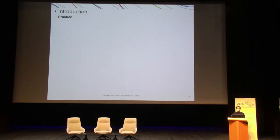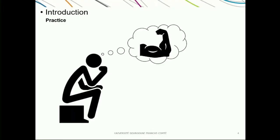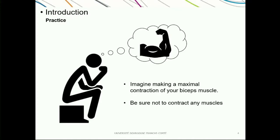Maybe we can just try together one trial of motor imagery — it just takes a few seconds. All you have to do is put your arm in this position and imagine that you are making a very strong contraction of your biceps muscle. Be sure that you are not really contracting any muscle. Remember, it is a mental process, so you just have to imagine the contraction — it may last two or three seconds.